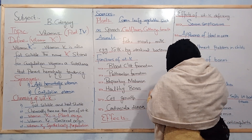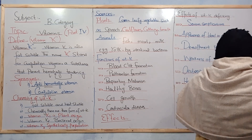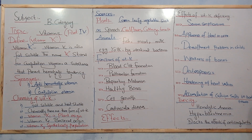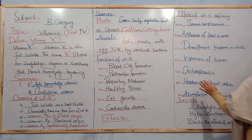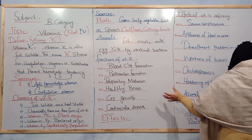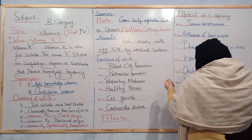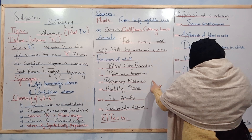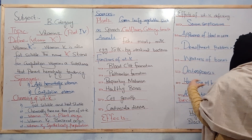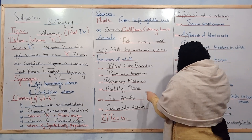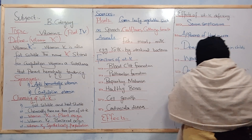Vitamin K also plays a role in the respiratory mechanism, functioning as an essential component of cells. In plants, vitamin K is an essential component of the photosynthetic process. Additionally, vitamin K is necessary for healthy bones, maintaining their hardness and structural integrity.